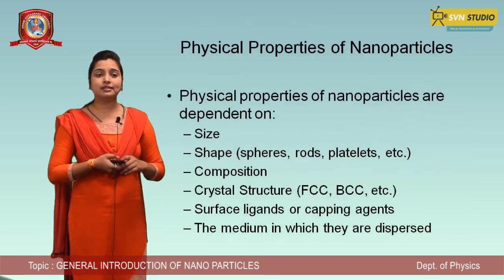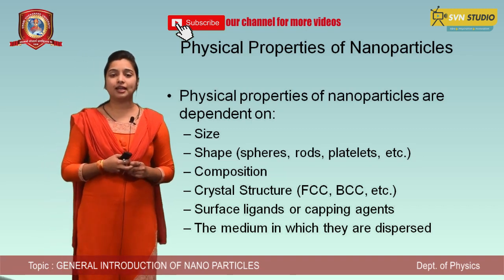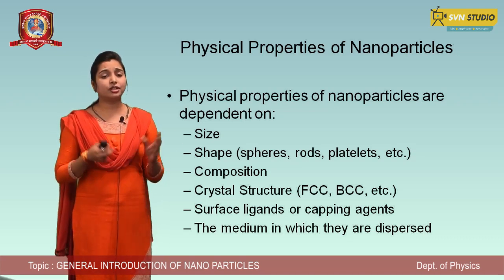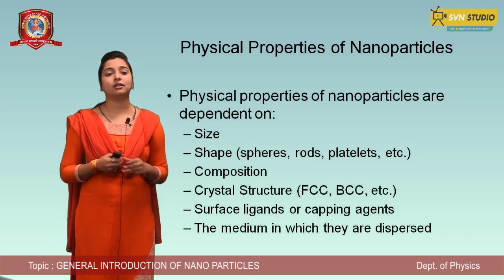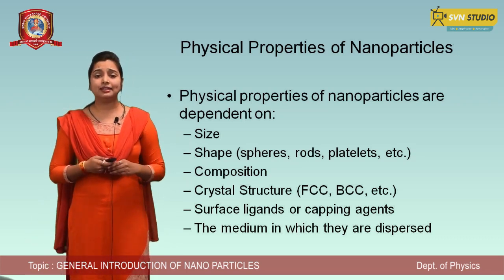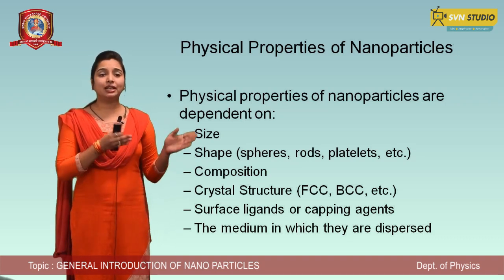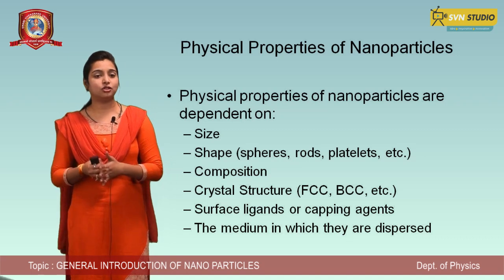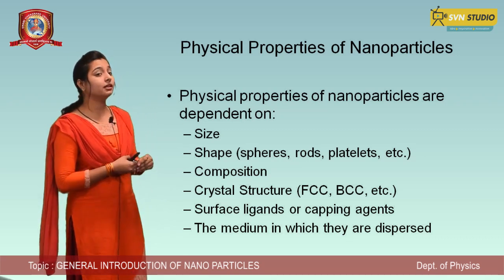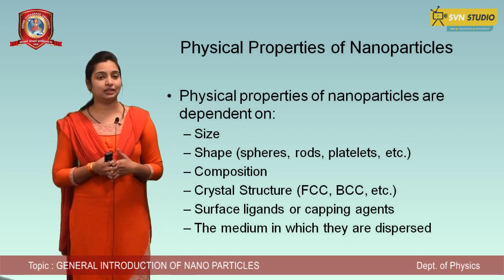Now we will discuss some physical properties of nanoparticles. Nanoparticles are very small in size, ranging between 1 and 100 nanometers. Their surface area is very high, and they are very reactive, which is why they are widely used. Compared to bulk material, nanoparticles differ considerably — for example, gold particles and gold nanoparticles show quite different properties.